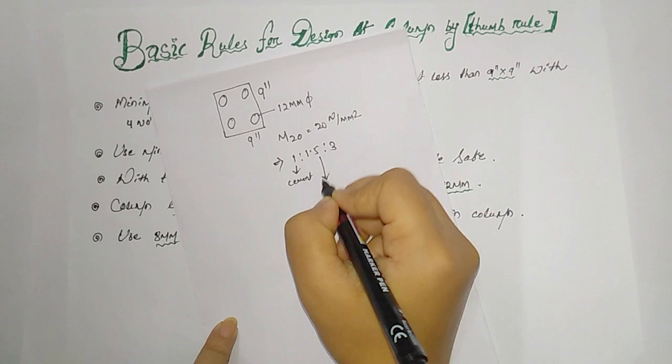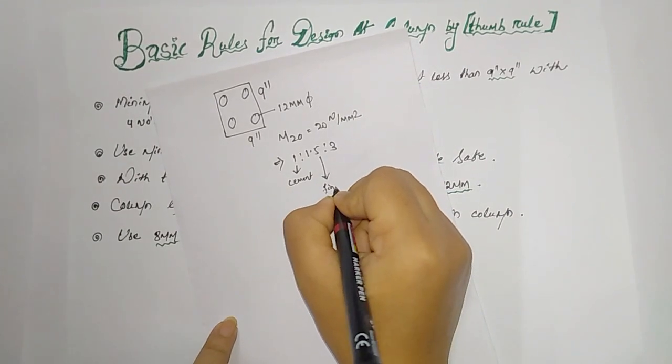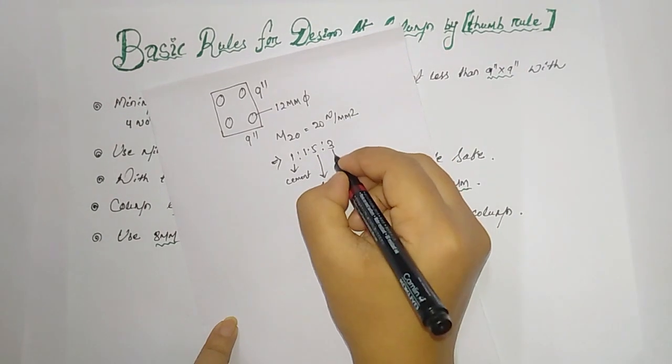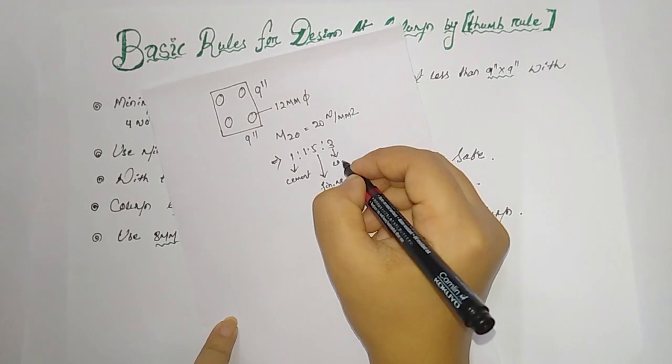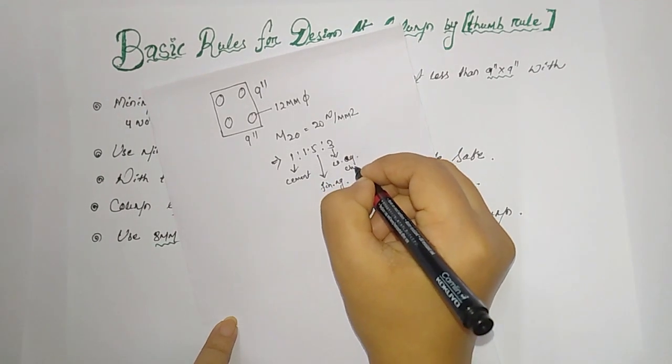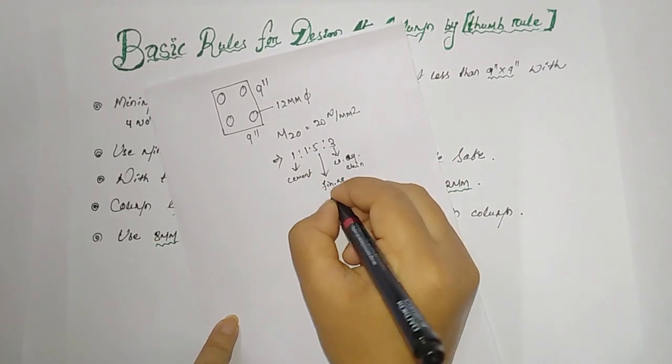1.5 is fine aggregate and 3 is coarse aggregate, or chips. Fine aggregate means sand.